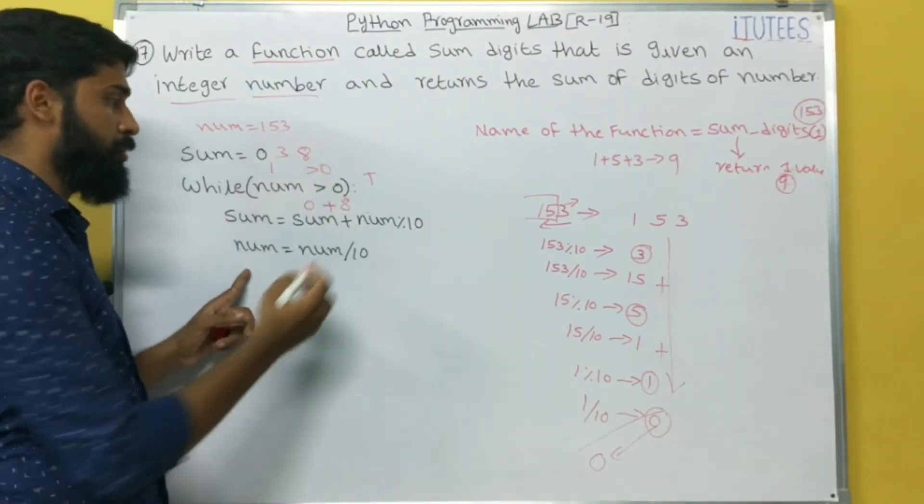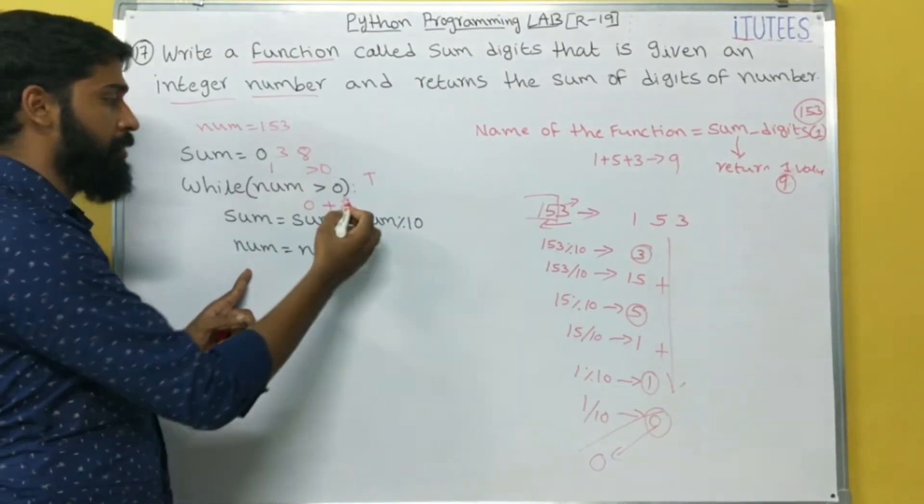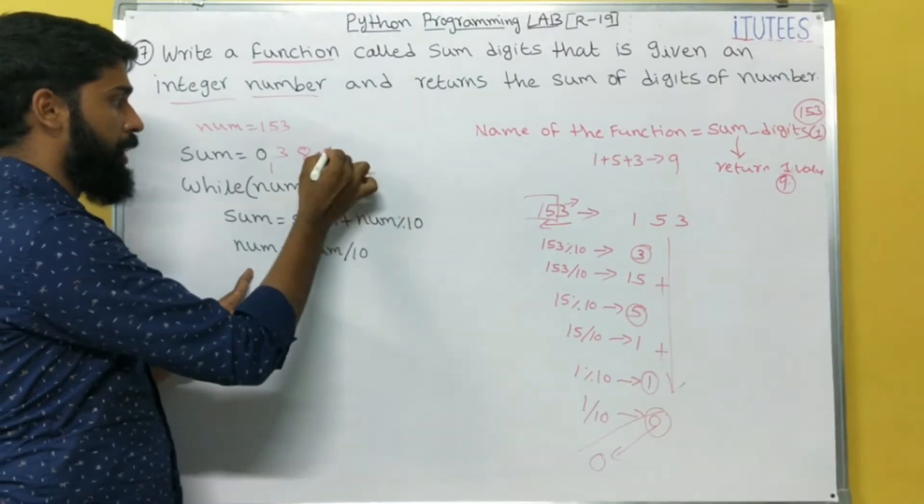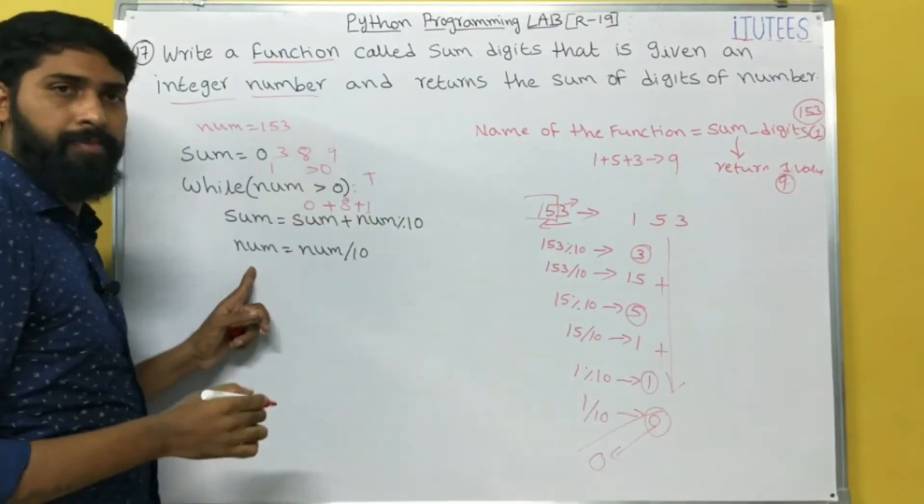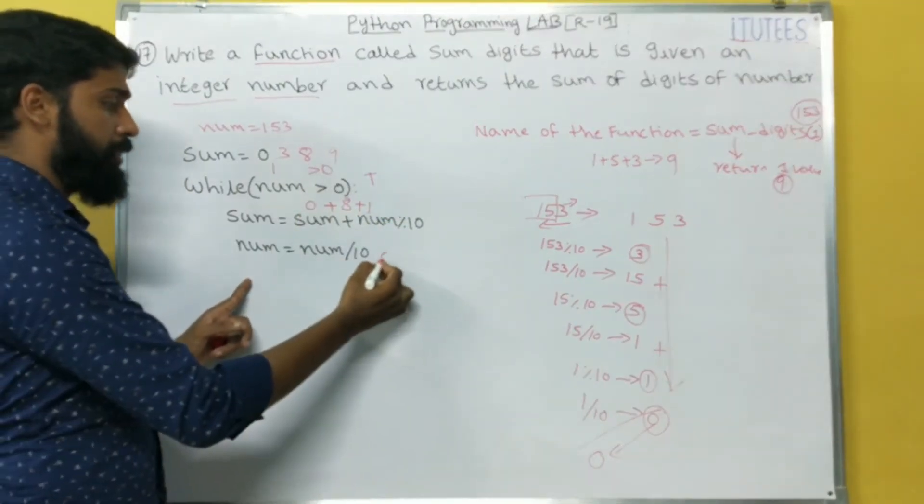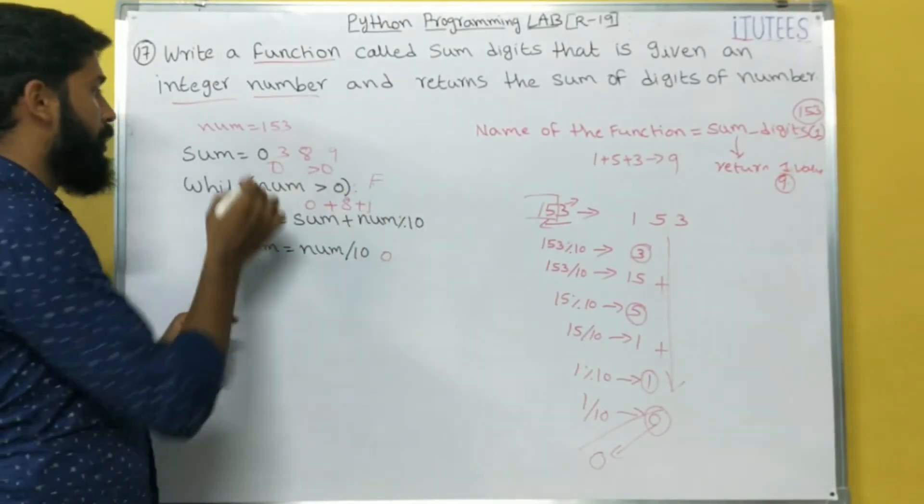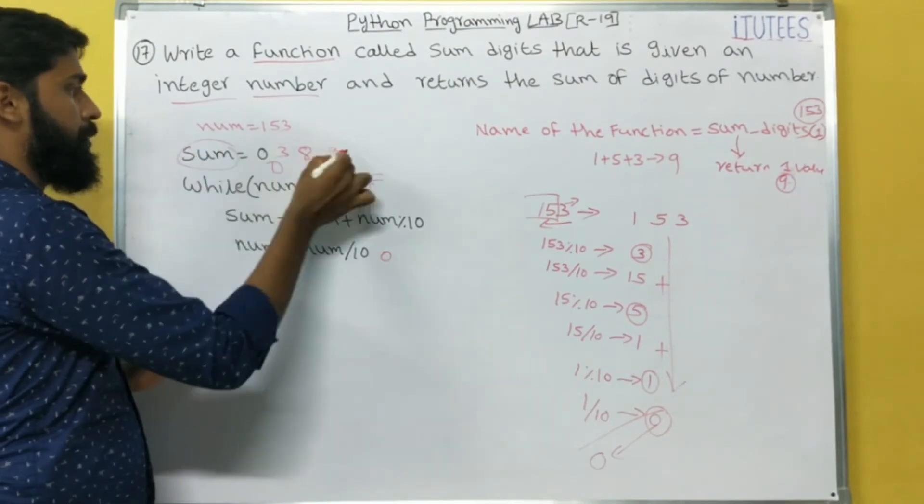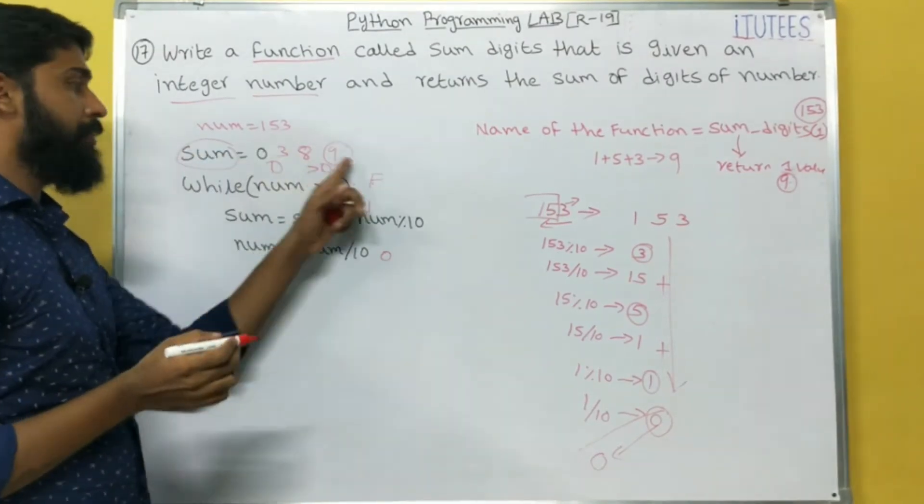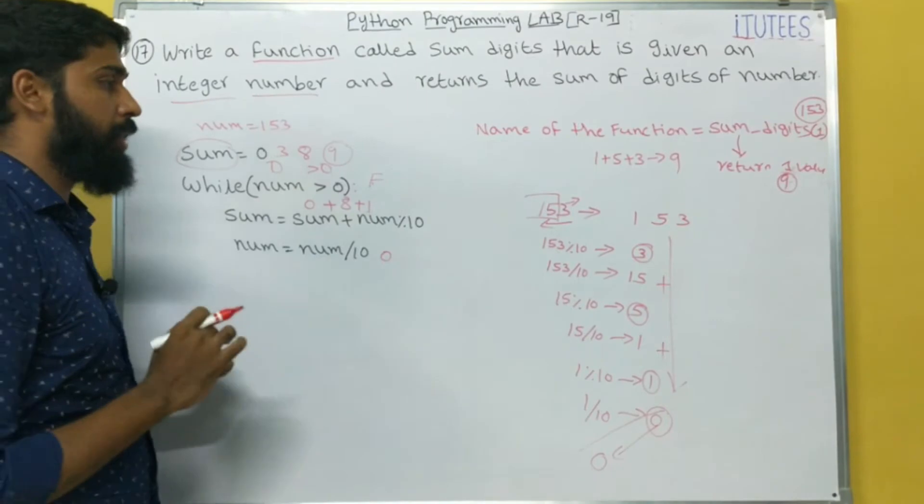1 greater than 0. True. 1 percentage 10. 1. So, 8 plus 1. 9. And 1 by 10. 0. 0 greater than 0. False. Now, so, this is the sum. This is the sum. 9. We return this value.